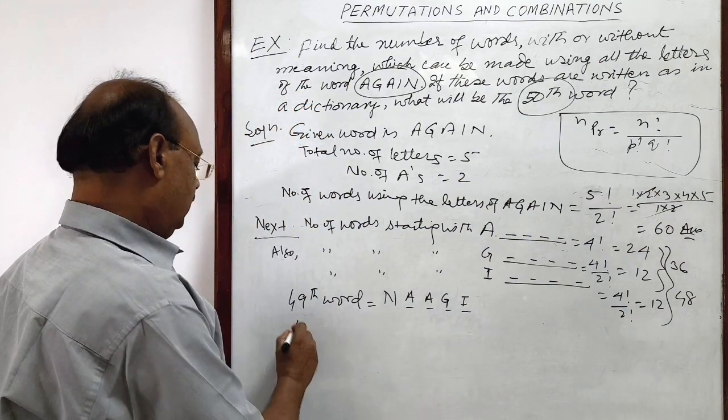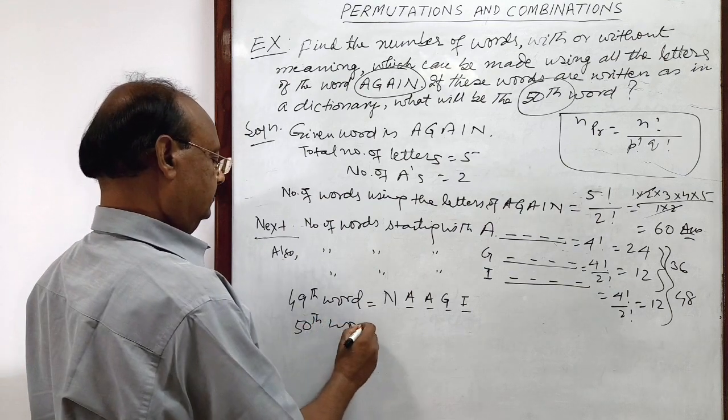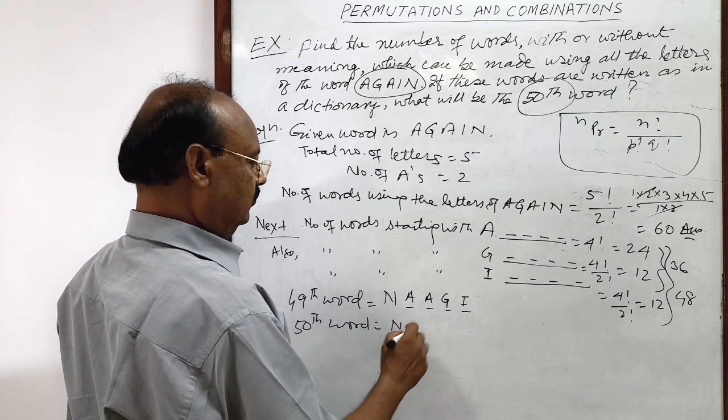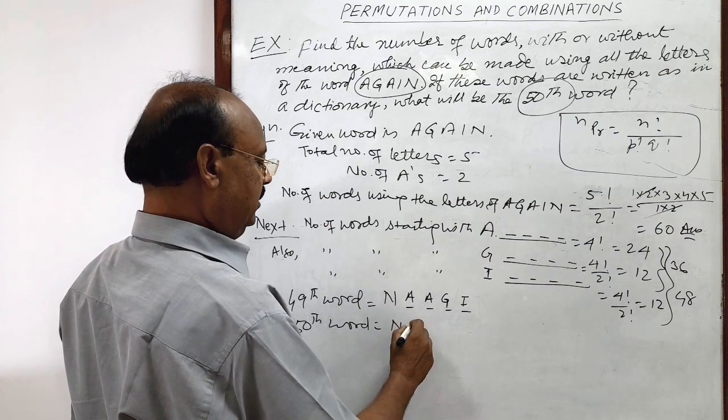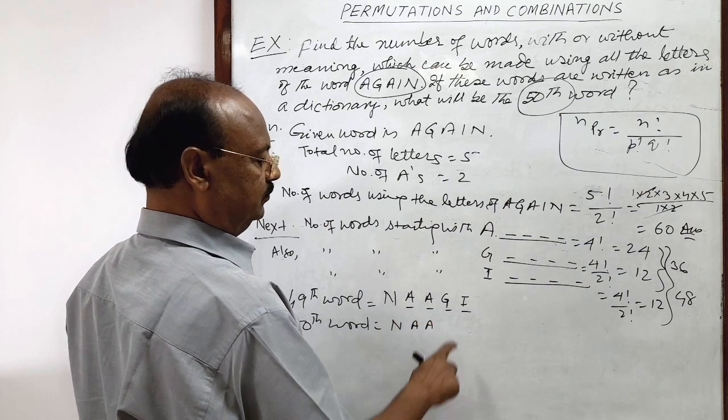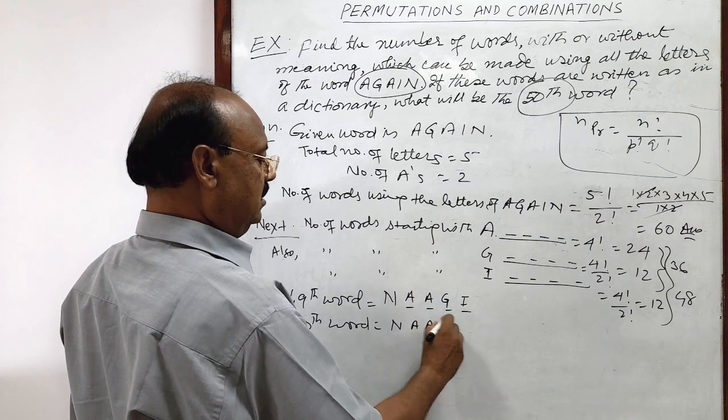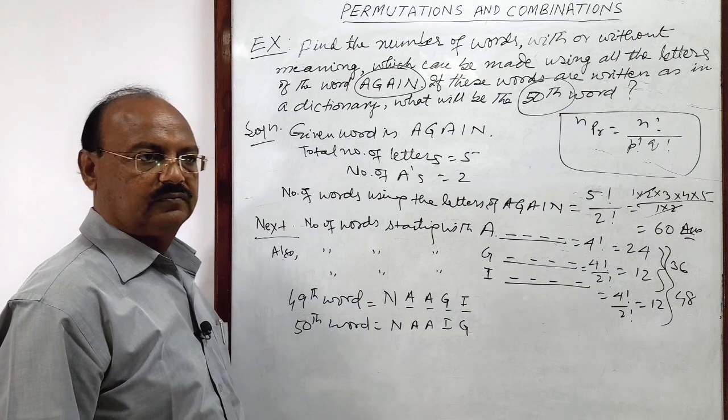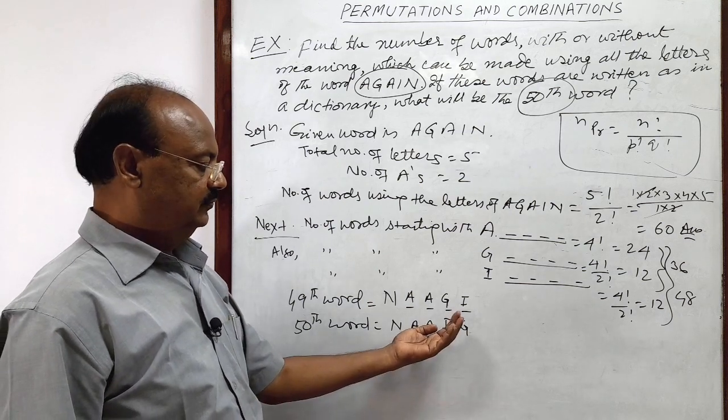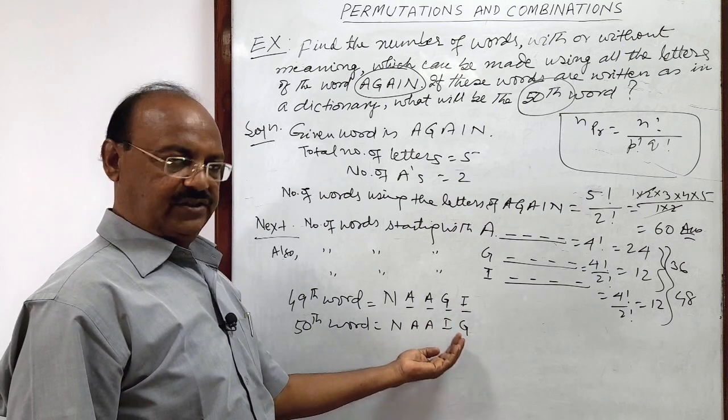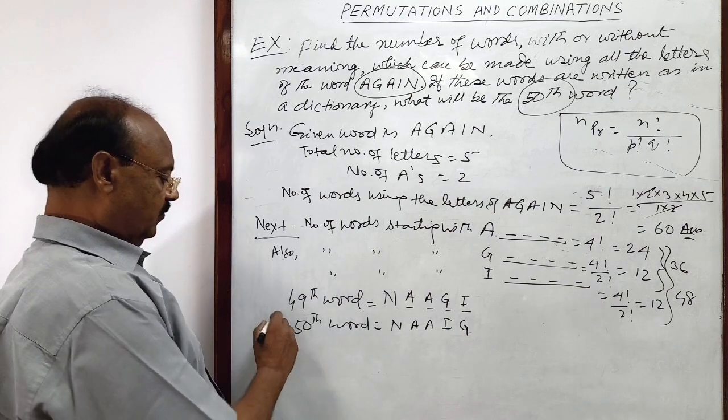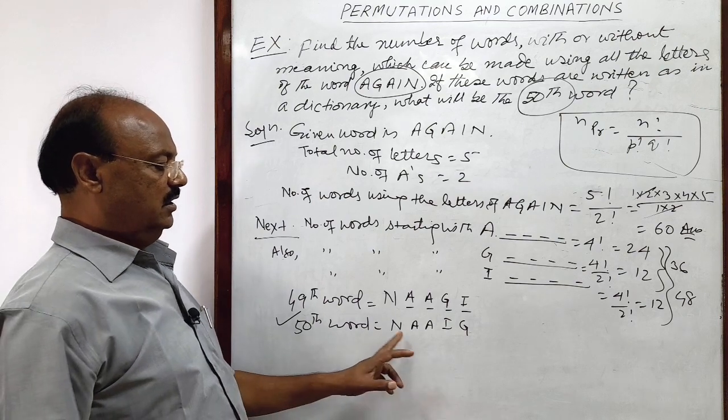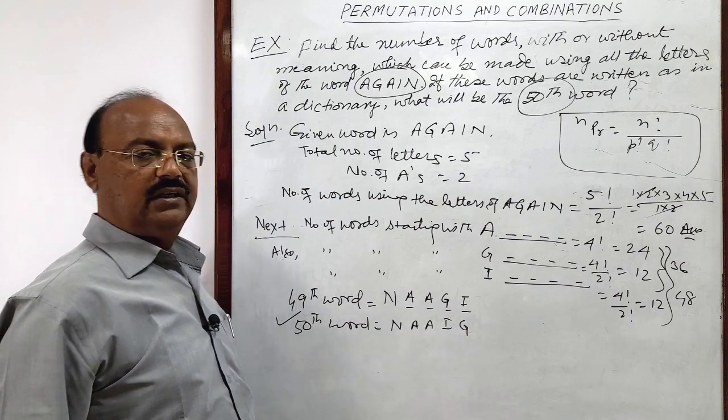And 50th word, again starting with N, both the A's will be here, then next we will have I and then G. First letter comes in dictionary here. This is the answer. 50th word is N, A, A, I, G.